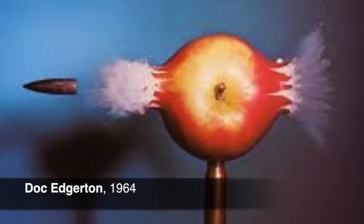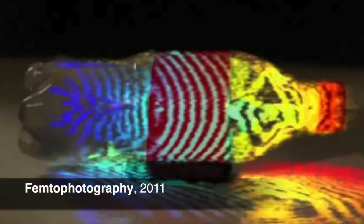In 1964, Doc Edgerton at MIT used a stroboscopic technique to visualize a bullet as it traveled through an apple. In 2011, researchers at MIT set their sights on a new goal: to capture light as it traveled through a scene. This technique was called femtophotography and used a half million dollars worth of scientific equipment to achieve this goal.